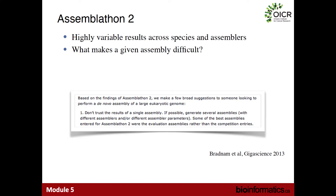Looking at the Assemblathon 2 project — one of the main findings was that there's basically no single best assembler. The Assemblathon was a benchmarking project where they sequenced three different species — a fish, a snake, and a parakeet — and released those to the community of genome assembly software developers. They had teams run their tools on these genomes, send results back, and scored the assemblies. There was basically no assembler that did great across all different species — some were better for the snake genome, some were better for the bird genome, and results were quite variable.